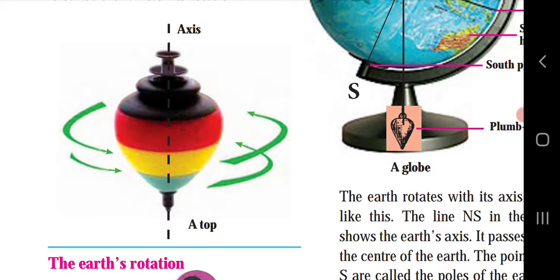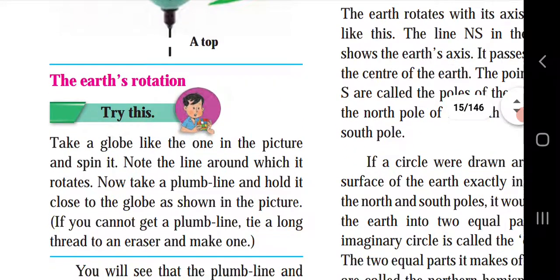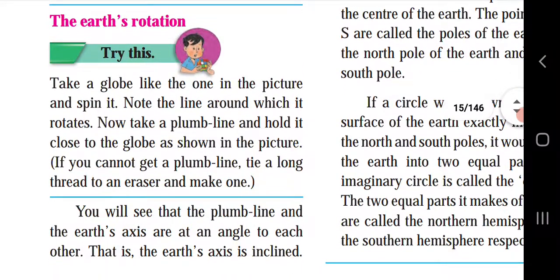The Earth's Rotation — Try this: Take a globe like the one in the picture and spin it. Note the line around which it rotates. Now take a plumb line and hold it close to the globe as shown in the picture. If you cannot get a plumb line, tie a long thread to an eraser and make one.